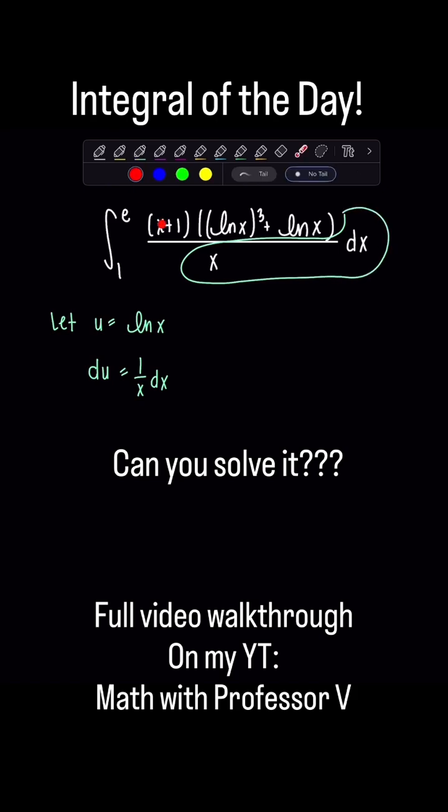Now I have this extra x here so I'm gonna rearrange, solve for x in terms of u. So rewriting this in exponential form we have e to the u is equal to x and then don't forget